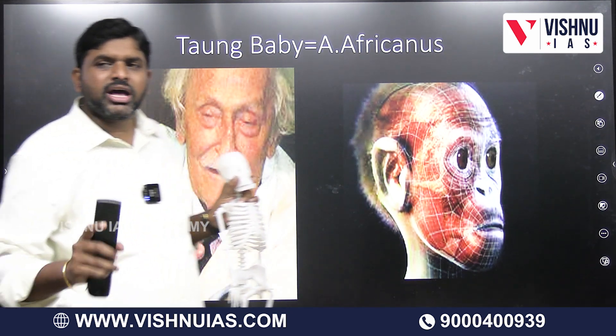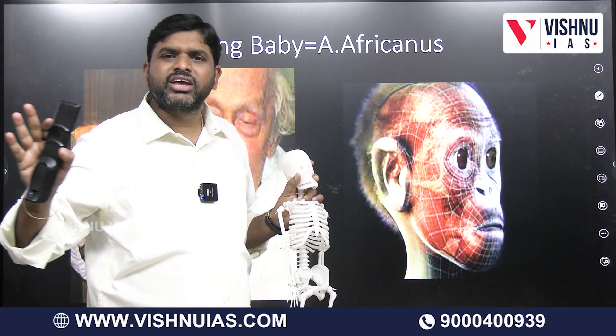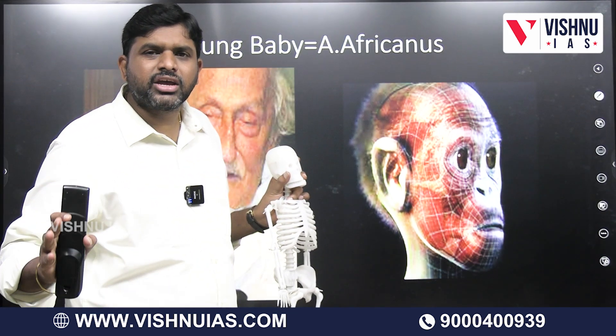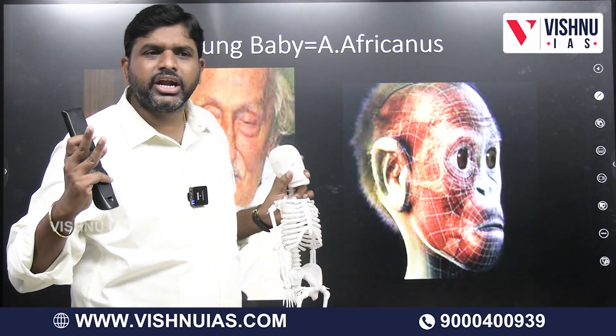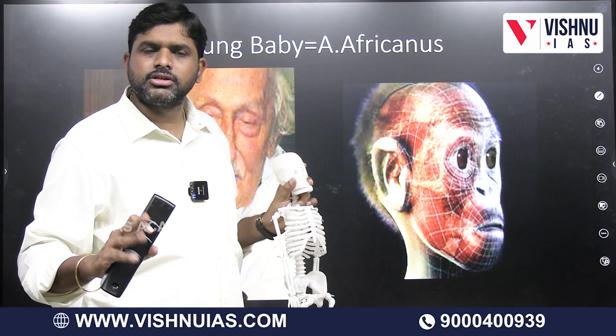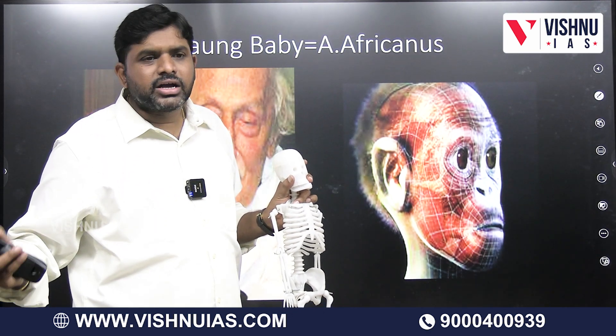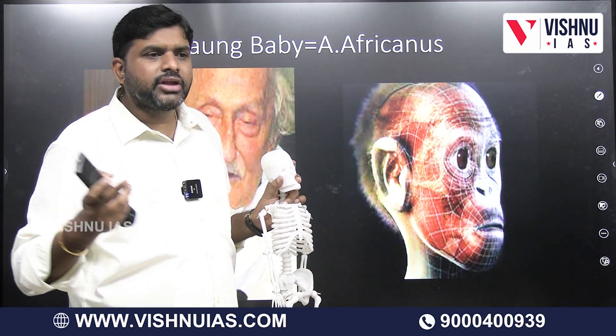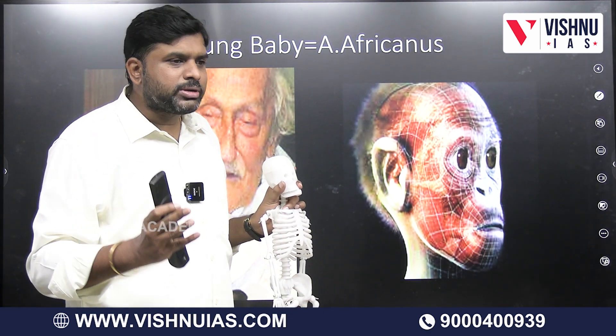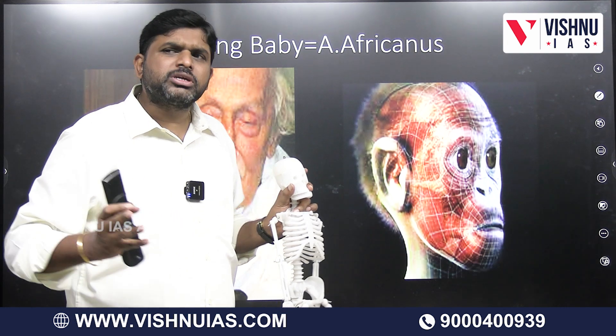About 5 million years ago in Africa — mainly in the South African part and East African part — we got two varieties of fossils. One variety is called the Gracile variety, and the other is called the Robustus variety.